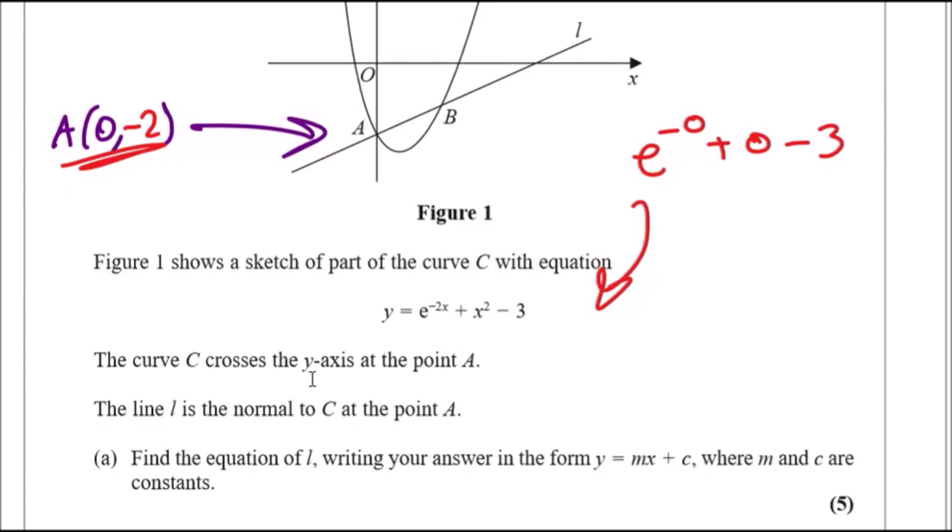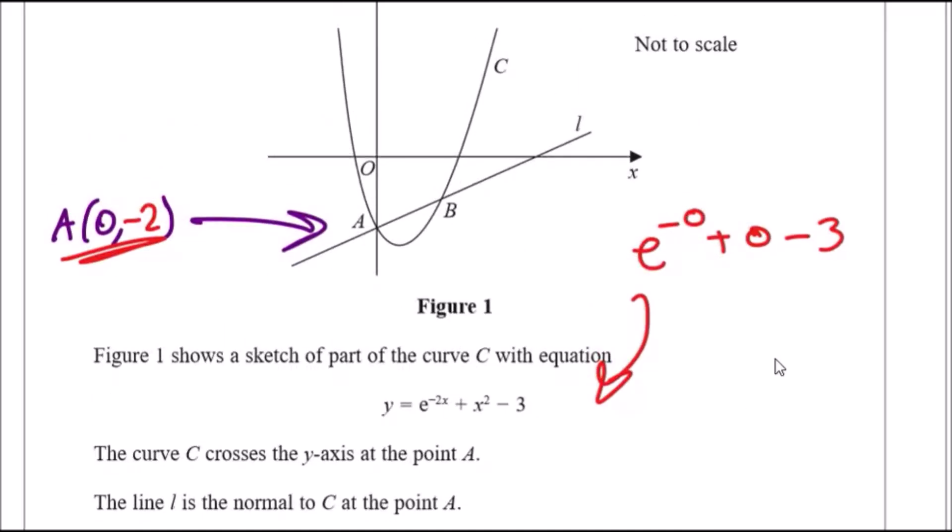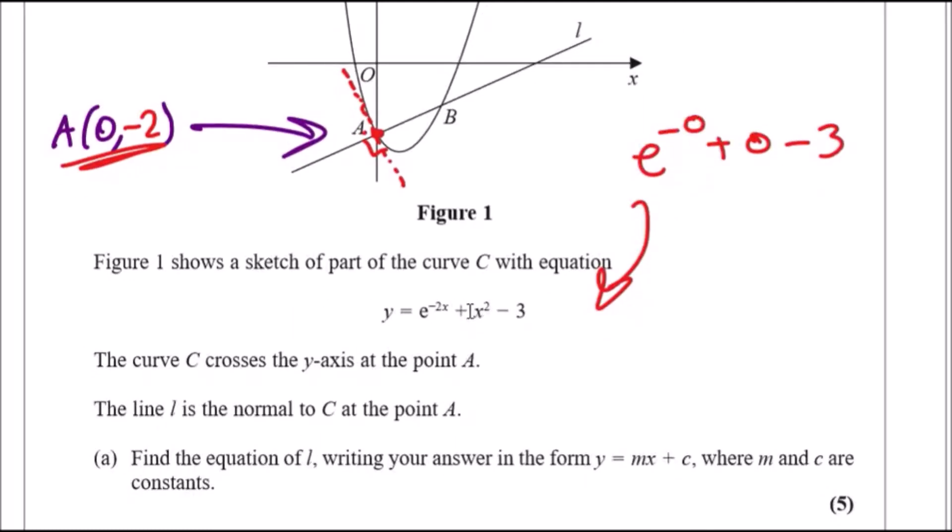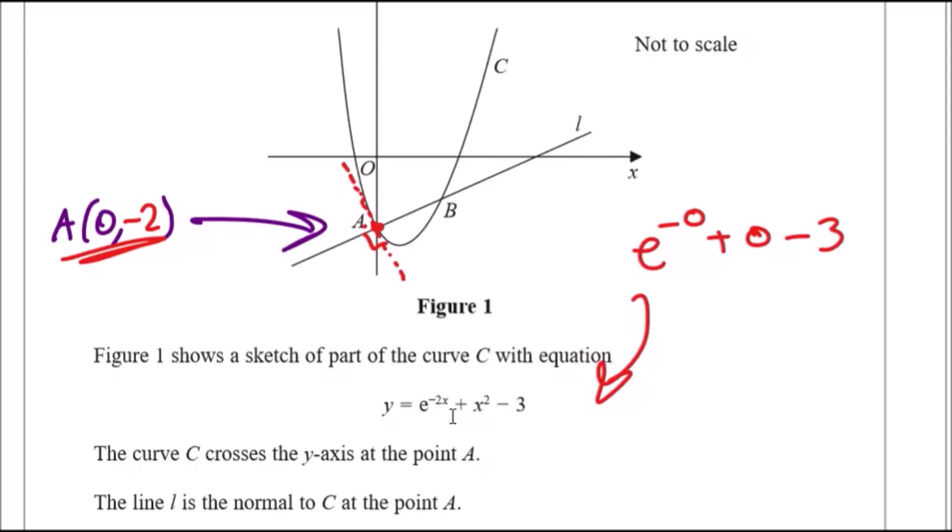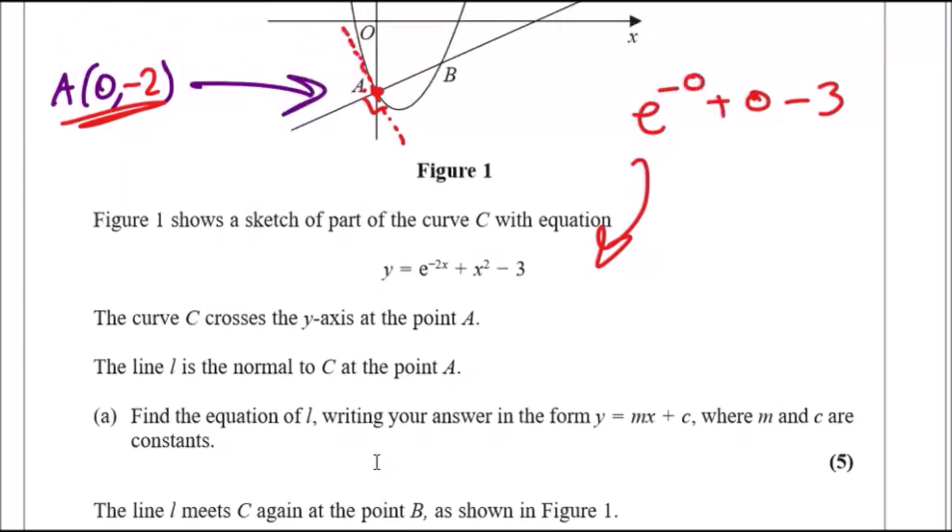Now carry on reading. The curve C crosses the y-axis at point A. The line l is the normal to C, keyword normal. If this is the normal, this means at some point there was a tangent which was a straight line, and the normal therefore makes it perpendicular at point A. So you can find the gradient of this normal by differentiating and replacing the value of x which is zero, then taking the reciprocal to find the perpendicular gradient.